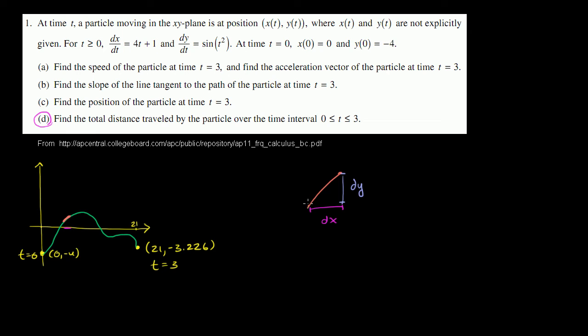We know from the Pythagorean theorem, if we get small enough, you can approximate this as just a hypotenuse. This is the base, this is the height, and this is the hypotenuse. This is going to be the square root of dx² + dy², straight from the Pythagorean theorem.